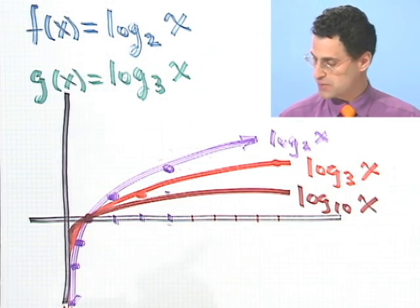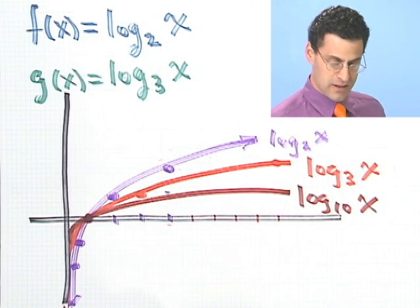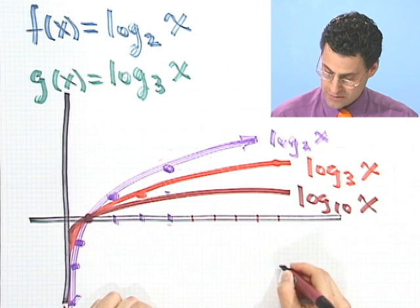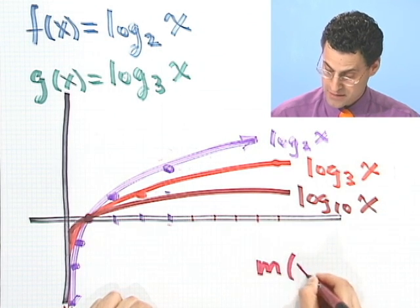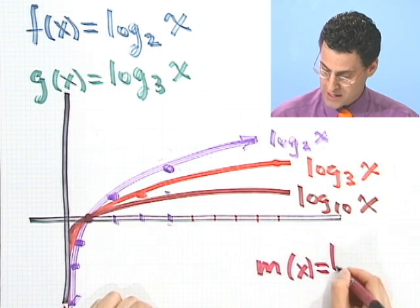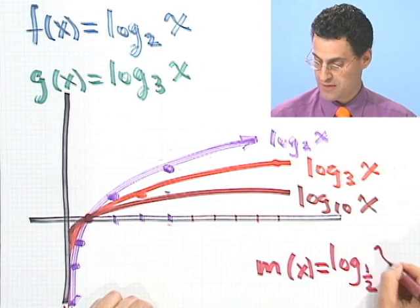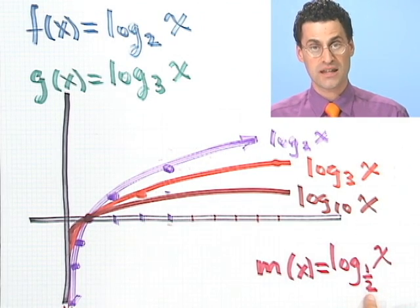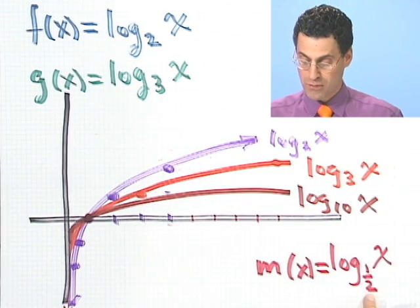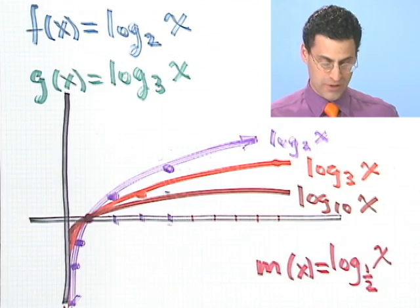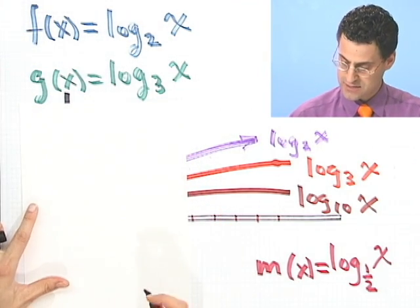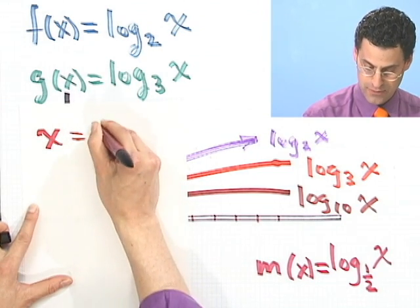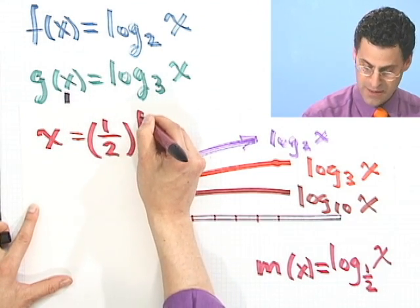Let's just do one last one to really muck up the works. Let's try m(x), I'll call it m of x for muck. Mucking up the works, we'll look at log base a half of x. What if you have a number down there that's a half, instead of just being a big number? Well, if you convert what that means into an exponent, what you see is x equals one half to the m(x). And if you rewrite that, you'd see x equals 2 to the minus m(x).